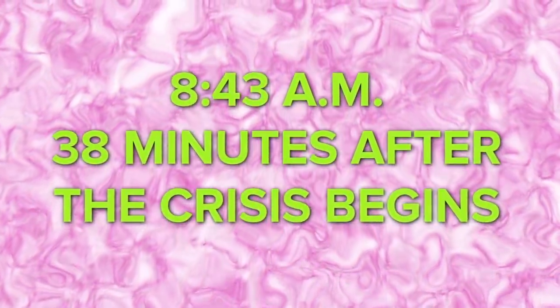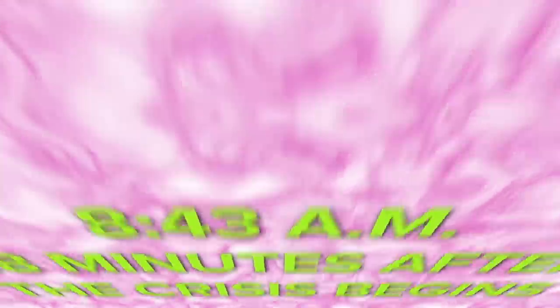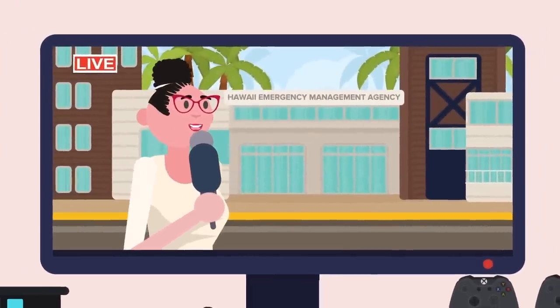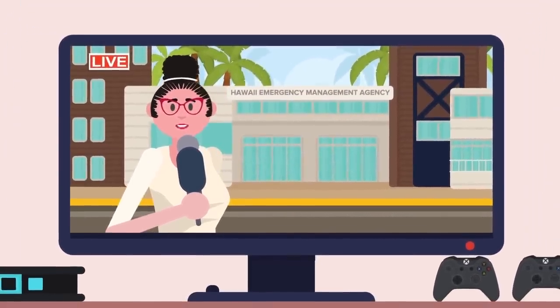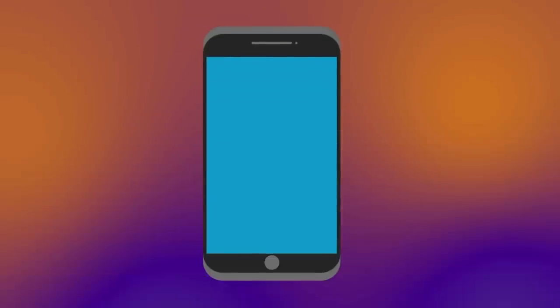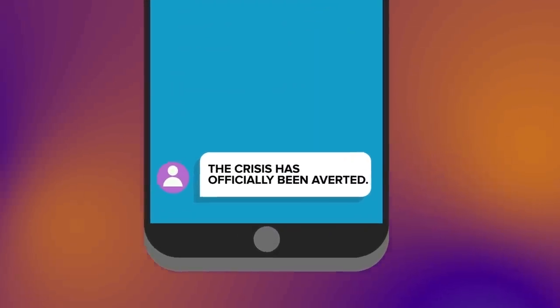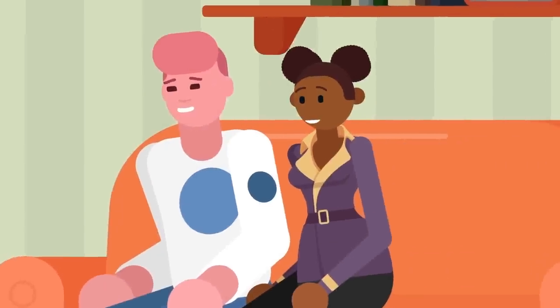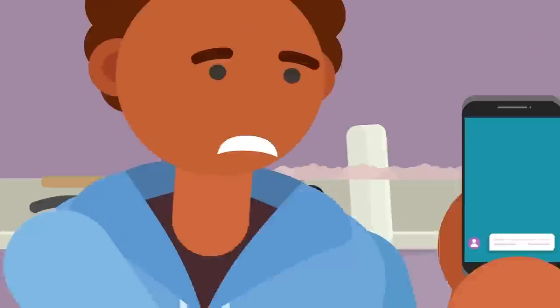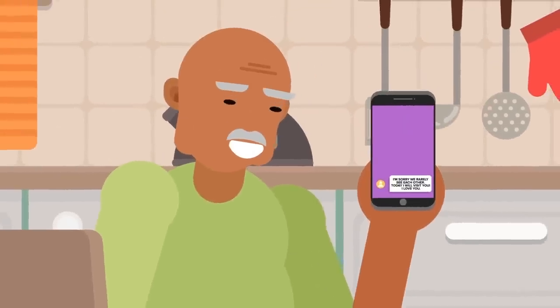8:43 AM, 38 minutes after the crisis begins. It ends with another message from the Hawaii Emergency Management Agency. For 38 terrifying minutes, much of the population across the islands of Hawaii was terrified that their lives were about to end. It wasn't until the Hawaii Emergency Management Agency sends a second message that the crisis is officially over. The same message is broadcast via television and radio to spread the good news as quickly as possible. For the rest of the day, people call and message their loved ones. A renewed sense of importance is given to the ones they care about.